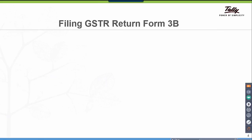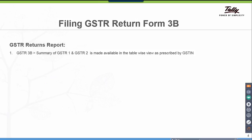Let us look at the procedure for filing GSTR return Form 3B. The GSTR 3B summary of GSTR 1 and GSTR 2 is made available in the table-wise view as prescribed by GSTN. Clear the exceptions if any. Print return Form 3B into a Word document. As we all know, GSTN has not provided any offline utility nor is there a provision to do direct uploading of GSTR 3B returns, so take a print from Tally.